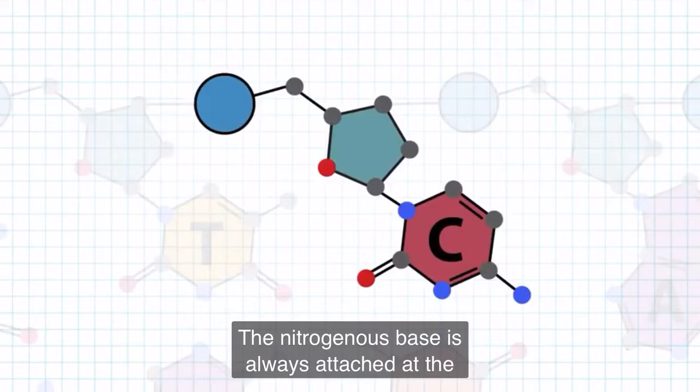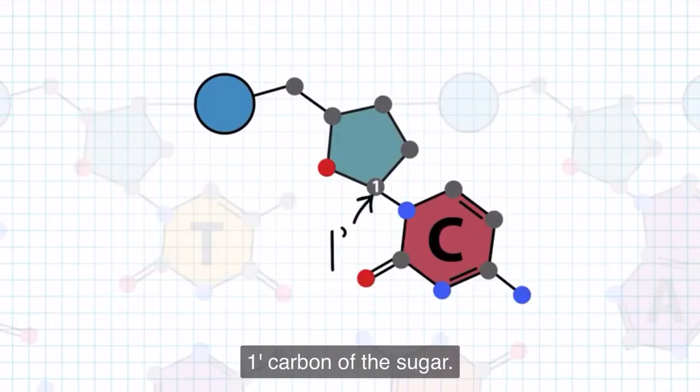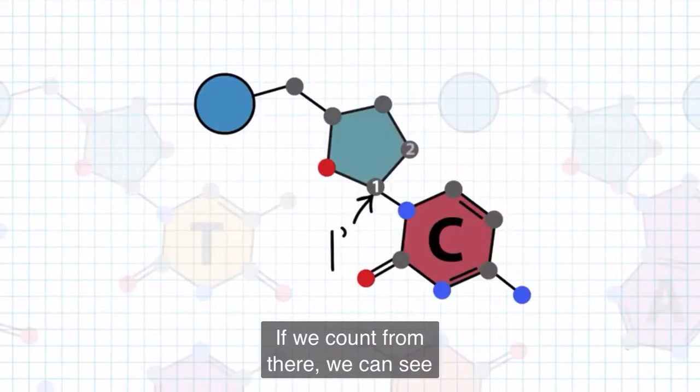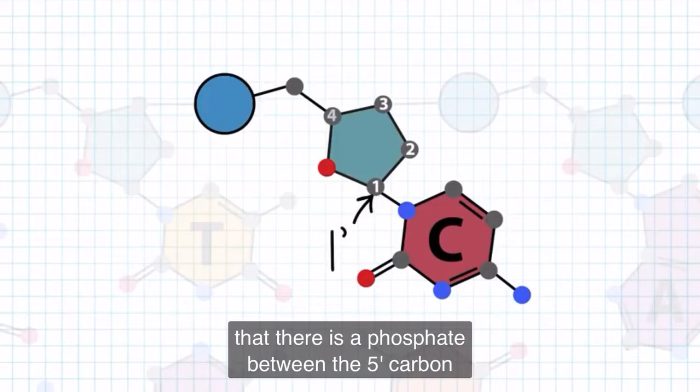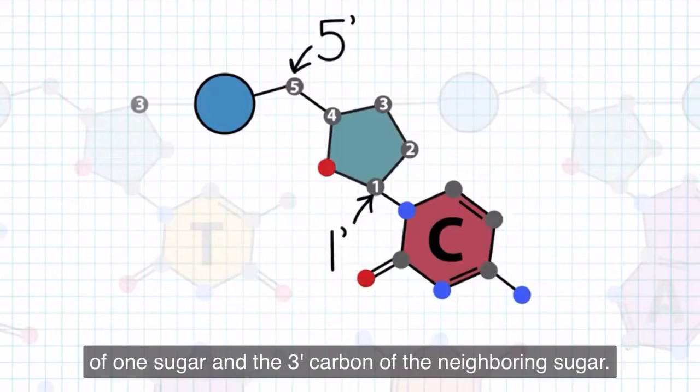The nitrogenous base is always attached at the 1' carbon of the sugar. If we count from there, we can see that there is a phosphate between the 5' carbon of one sugar and the 3' carbon of the neighboring sugar.